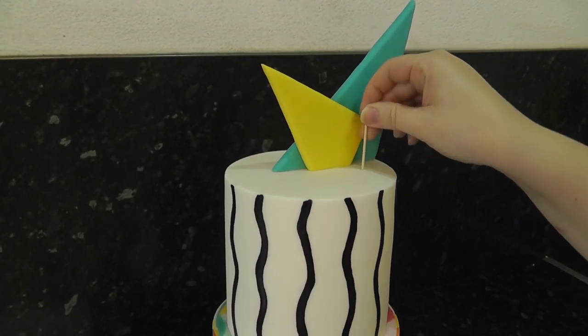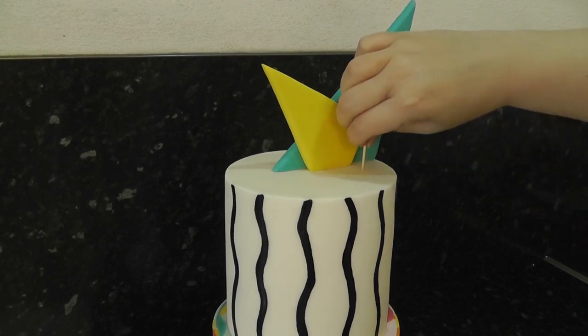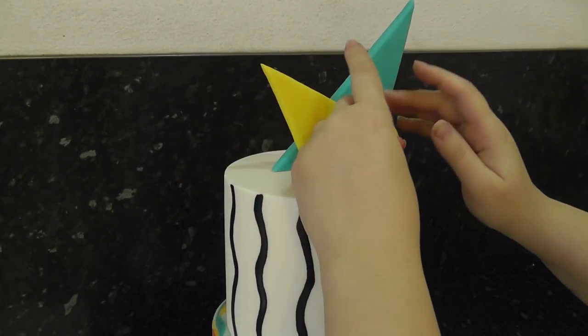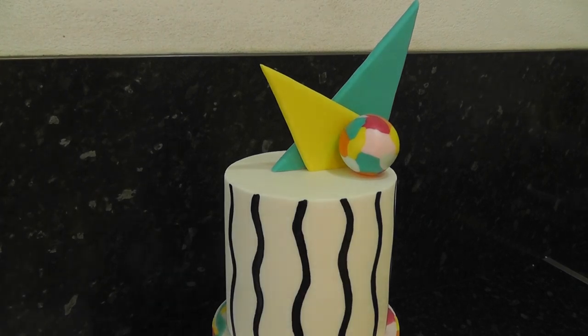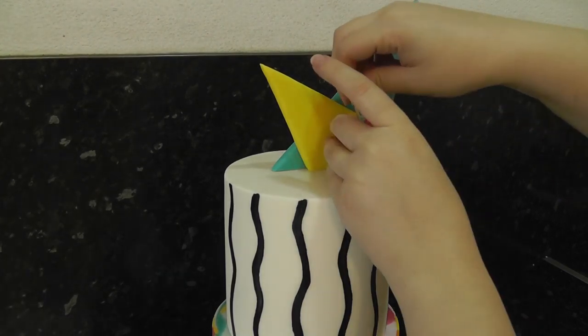Stick the other one on with some melted chocolate. As the balls are also polystyrene, they can easily be held into place with more cocktail sticks. I've stacked one on top of the other and then placed one on the side for more interest.